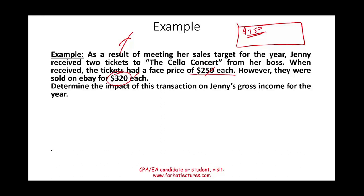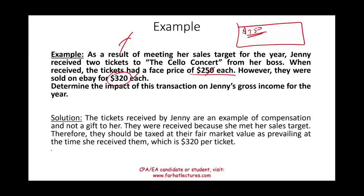The rule is that compensation is valued at fair value. The face value is $250, but if you want to buy them on the open market it is $320. The tickets are an example of compensation, not a gift — employers don't give gifts to employees. She received them because she met her sales target, so this is a form of compensation and should be taxed at fair value, which is $320.